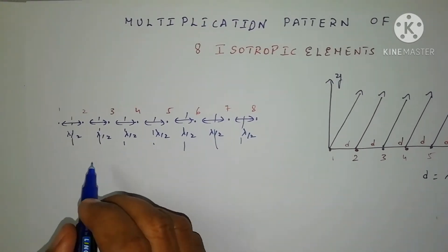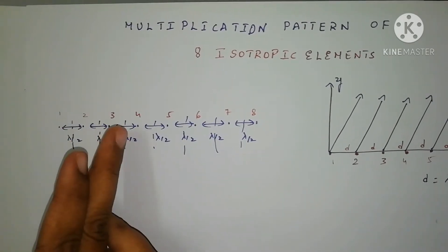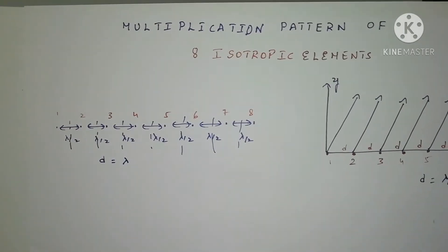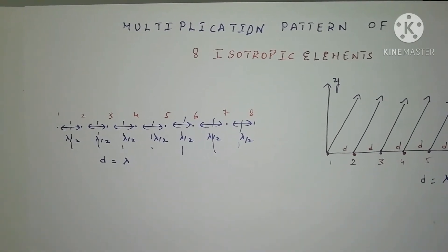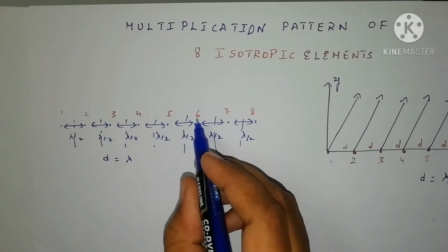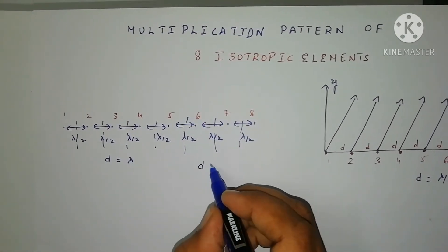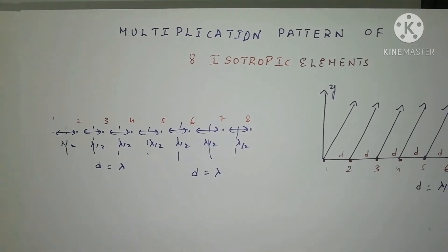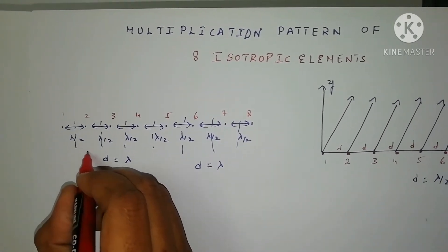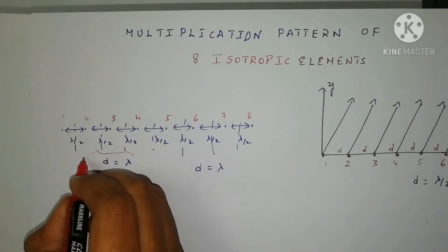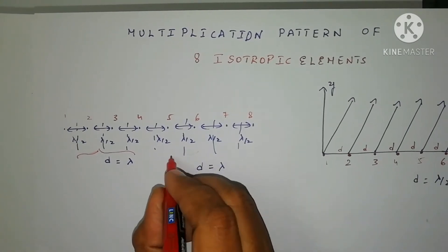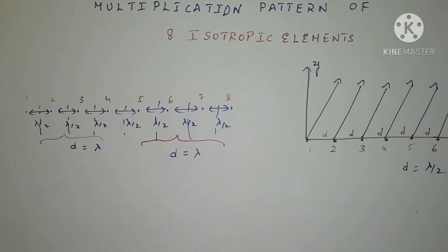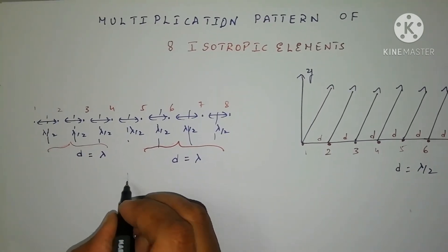For the first four isotropic elements, what is the spacing we got? D is equal to lambda — you can recall this from the previous video. For the remaining four elements, again the same thing is repeated with D equal to lambda. So for elements one through four we are getting D equal to lambda spacing, and again for elements five through eight we are also getting D equal to lambda spacing. If we add these two, finally we get D equal to lambda plus lambda, so D is equal to 2 lambda.